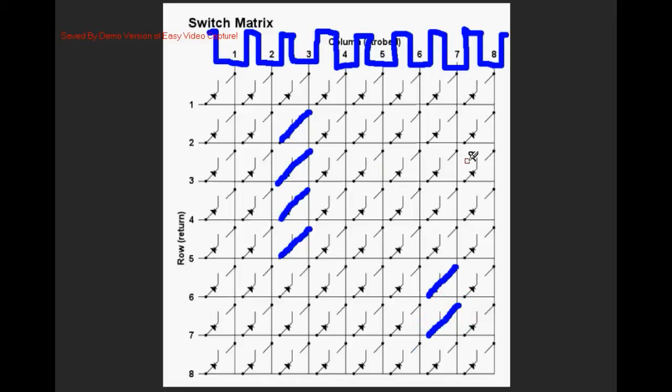So we'll put a couple more normally closed switches over here. Now let's say that column seven row three, the switch closes and when it closes we get a false indication that column three row seven has been closed.